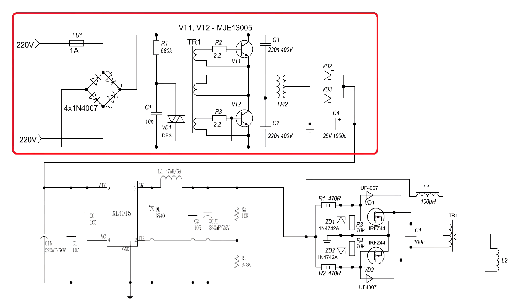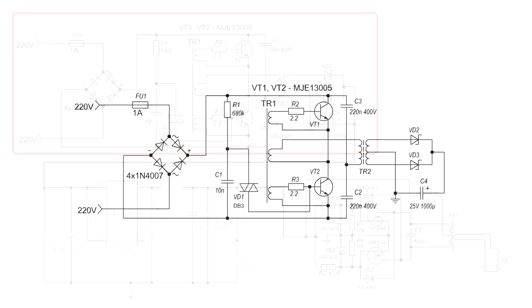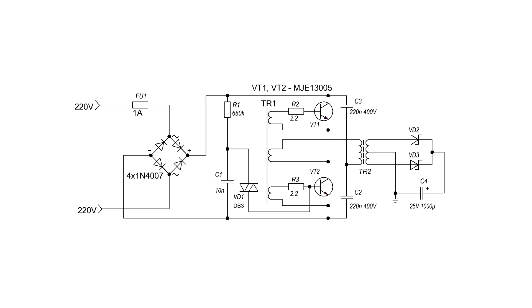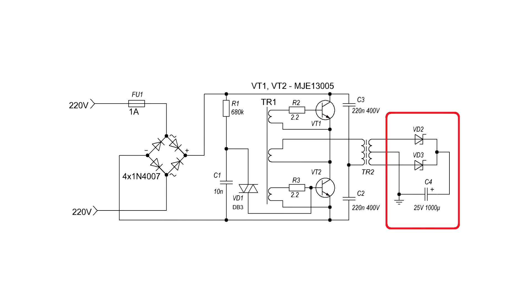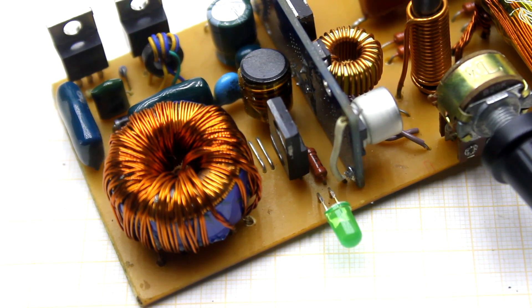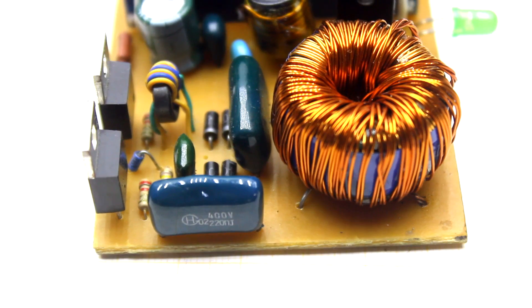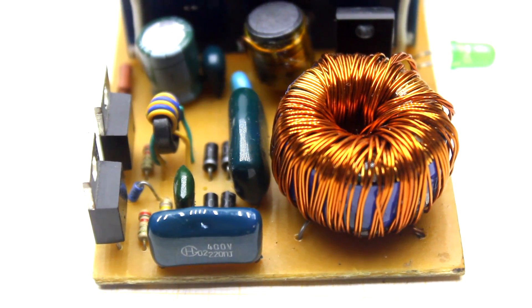The power unit is a rather popular auto-generating half-bridge inverter. This circuit is a typical electronic transformer for 12-volt halogen lamps supplemented by a rectifier. The rectifier is push-pull with an average point. Power supply ability is about 80 watts, but 50 would be enough.